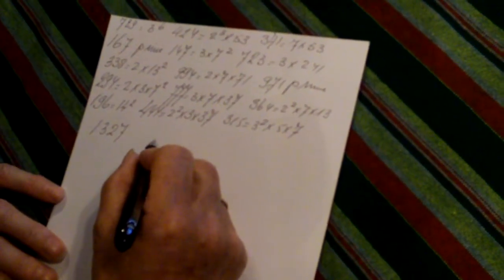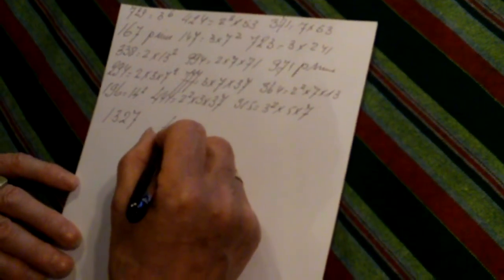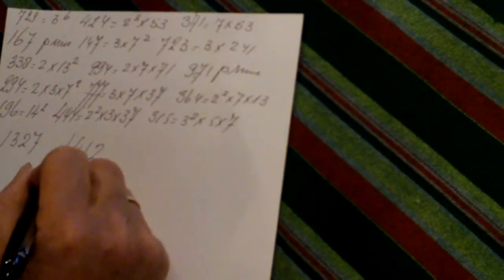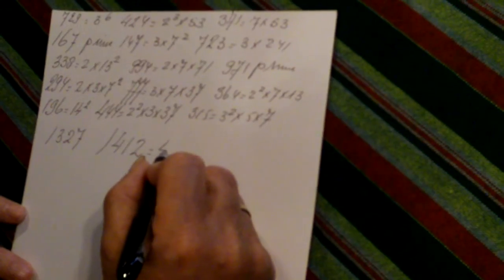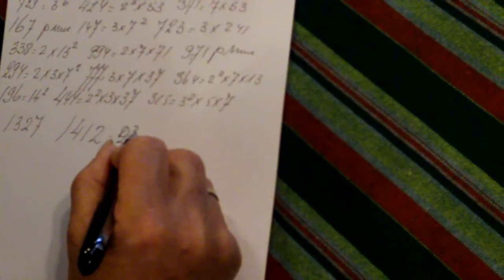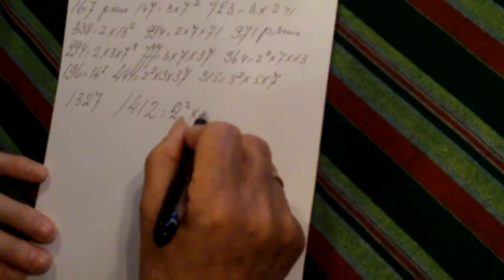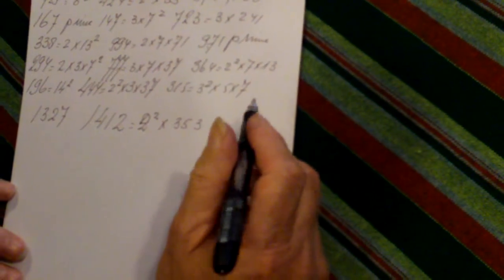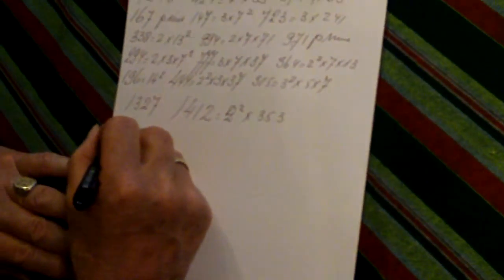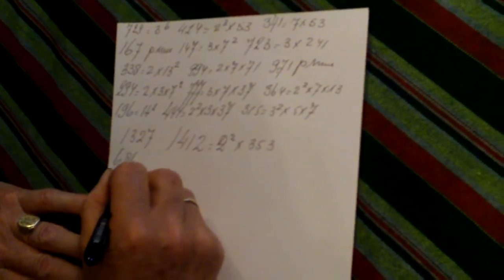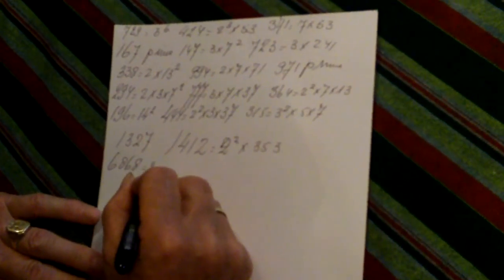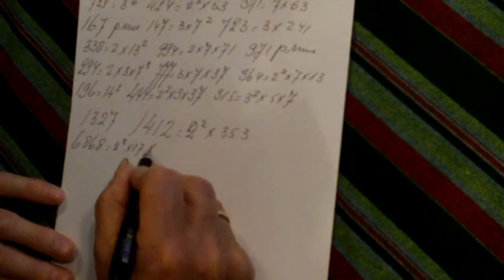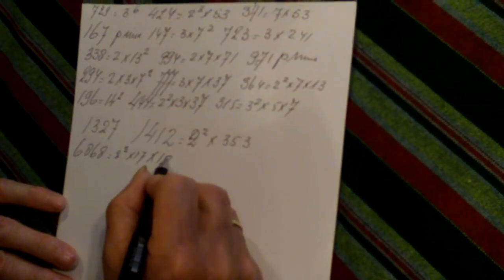One, four, one, two. Four, one, two? Yes. And 10,253, which is two squared times three — prime. 6868 is two squared times seventeen times one hundred and one.